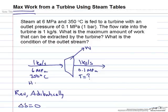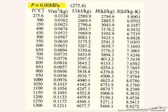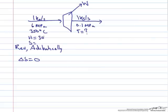We'll calculate first the enthalpy and entropy of the feed stream. Pulling up the steam tables at 6 MPa and scrolling down to 350 degrees C, we find that the enthalpy H is equal to 3044 kJ per kg and entropy S is equal to 6.34 kJ per kg Kelvin.